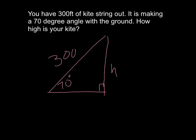So there's a drawing, yeah I didn't draw the kite, sorry. 300 feet of string, that's hypotenuse. H is an opposite. 70 is our angle, so we want to use sine.